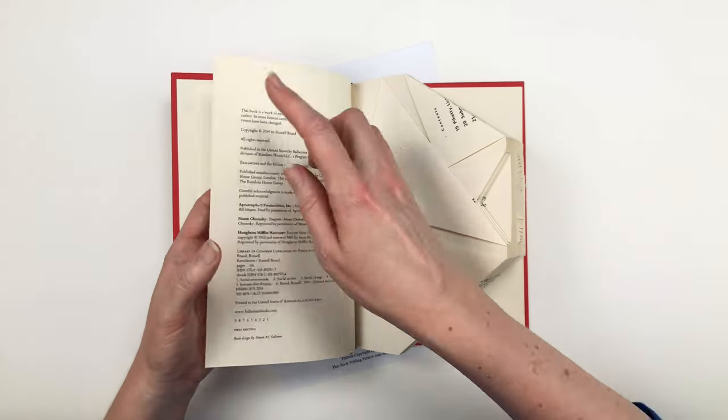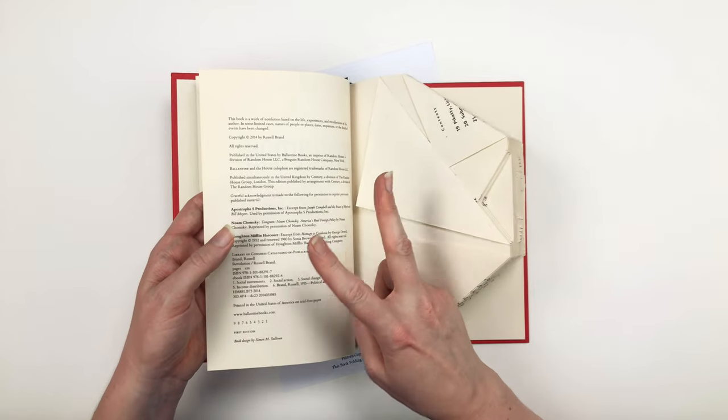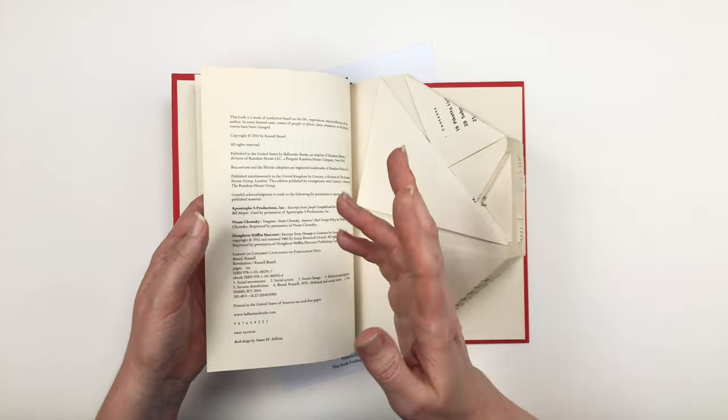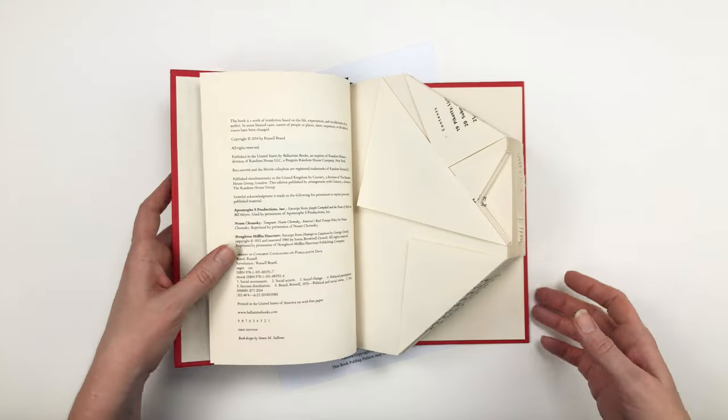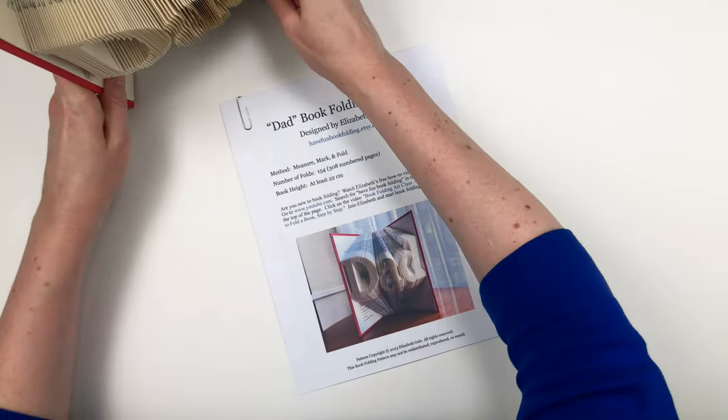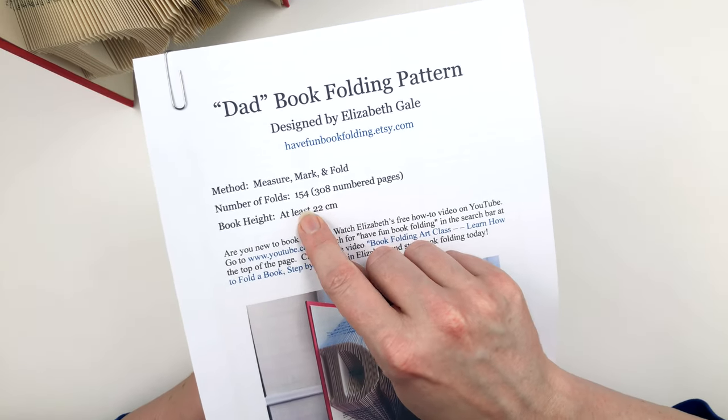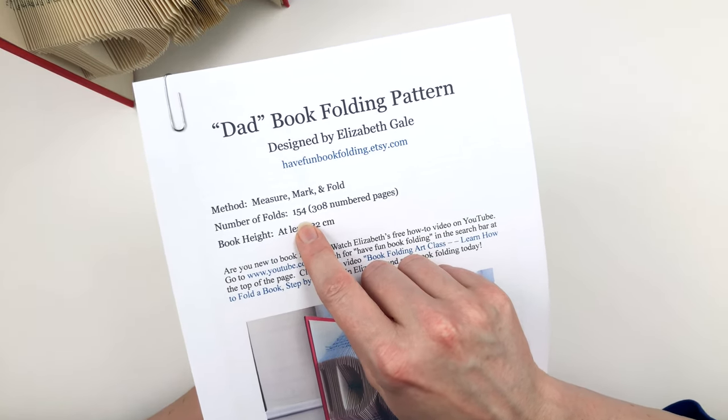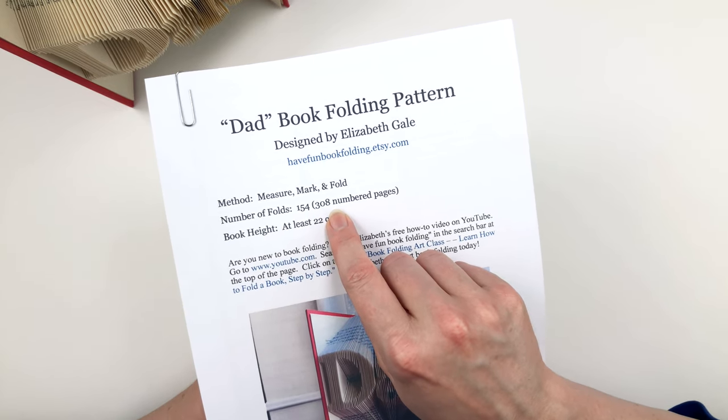And of course, it's numbered on both sides. So one fold equals two numbered pages, because each fold or sheet of paper is numbered on both sides. So if we look back at our pattern, you can see that's why this number is doubled here. 154 folds or sheets of paper equals 308 numbered pages.